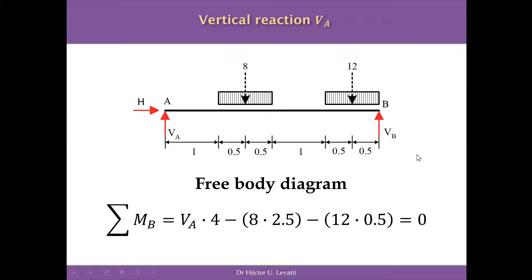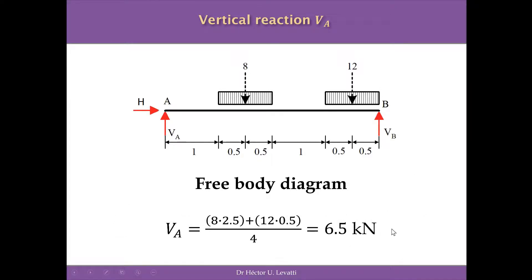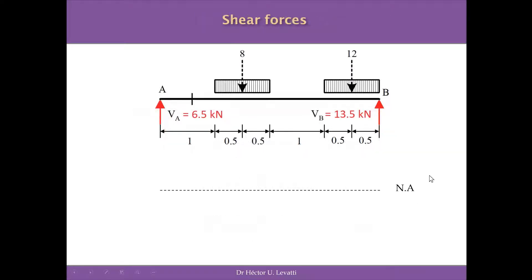Taking moments about point B: VA × 4 m (positive, clockwise) minus 8 × 2.5 m minus 12 × 0.5 m, all equal to zero. The reaction at A (VA) is equal to 6.5 kN. We have now resolved the reactions for this structure and can proceed to the shear force calculations.